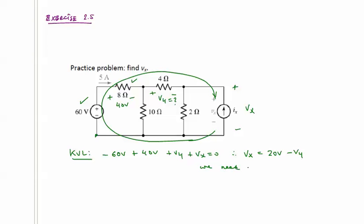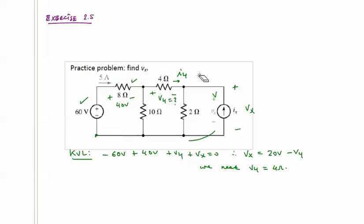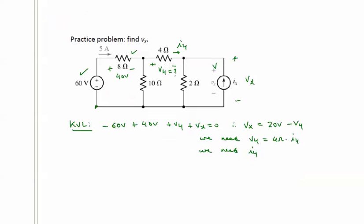So we need V4. Now, V4 is equal to, by Ohm's Law, 4 ohms times I4. So now, we need I4. If I know I4, I can get V4, and if I have V4, I can find Vx.